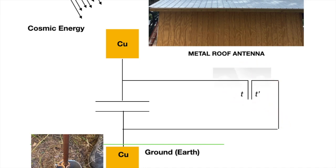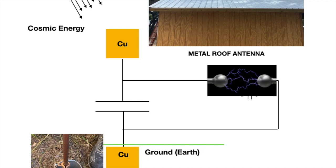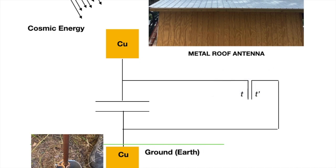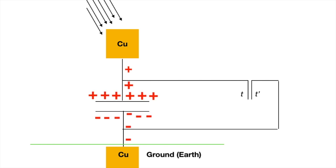And that spark gap is adjustable so that you can adjust at what voltage the spark gap pops. As you can see, when it pops, the voltage is going to ground.